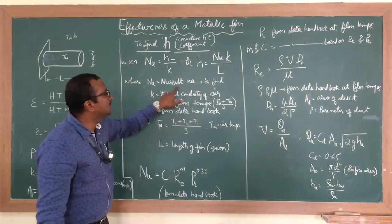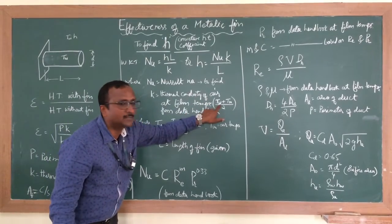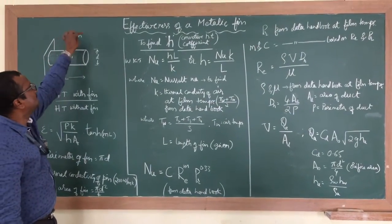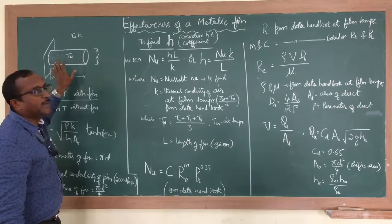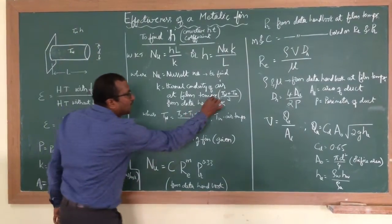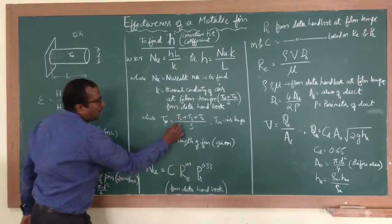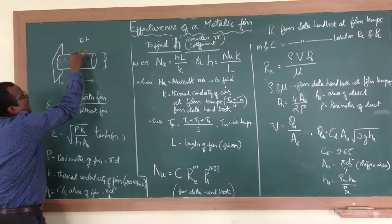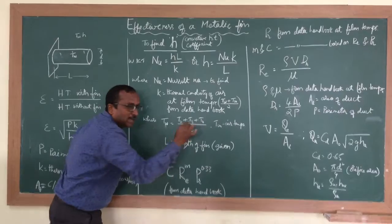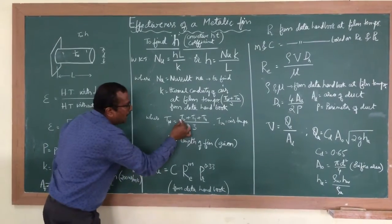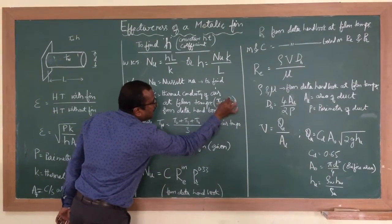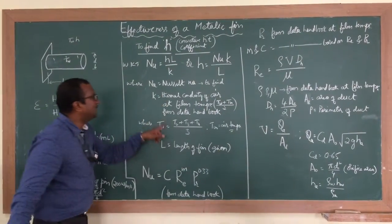The air properties must be taken at the film temperature. The film temperature is the temperature of the pin fin plus the temperature of the surrounding air, divided by 2 — the average of the fin wall temperature and the ambient air temperature. To find the wall temperature of the pin fin, thermocouples are placed at different positions, giving readings T2, T3, and T4. Those values are taken from the experiment. Once you know T_wall and T_infinity, you can calculate the film temperature.